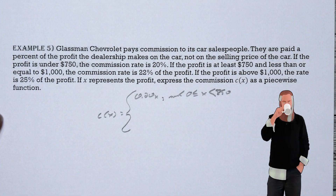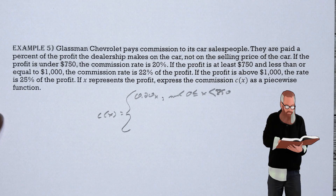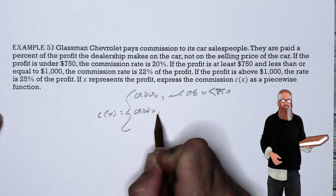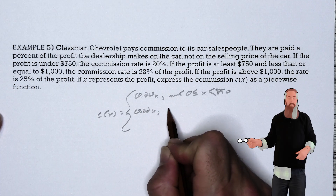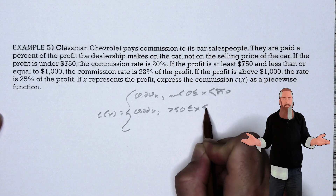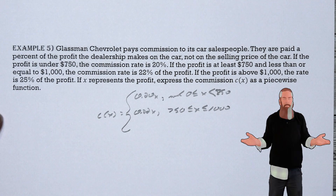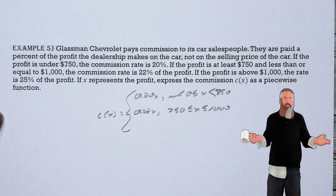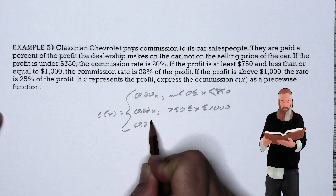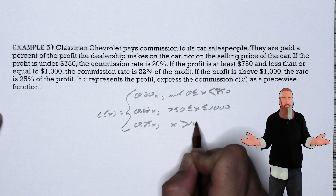Continuing the piecewise function for Glassman Chevrolet: for profits from $750 to $1,000 (750 ≤ x ≤ 1000), the commission is C(x) = 0.22x. For profits greater than $1,000 (x > 1000), the commission is C(x) = 0.25x.